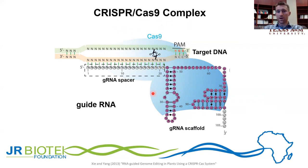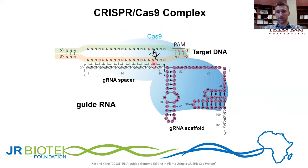When this whole complex scans a host genome, the spacer region will look for complementarity between its spacer region and the host genome. Once it finds and recognizes it, the Cas9 will be brought into close proximity and able to induce a double-stranded DNA break approximately four nucleotides upstream of the PAM site.